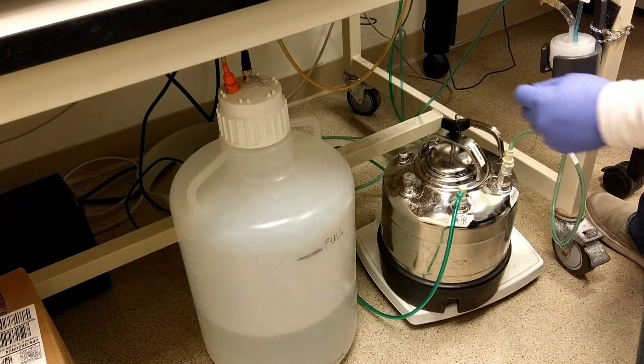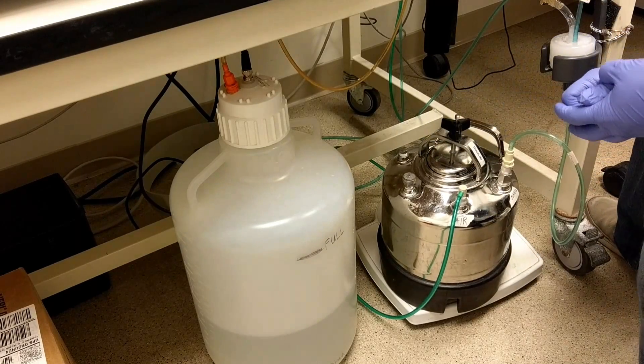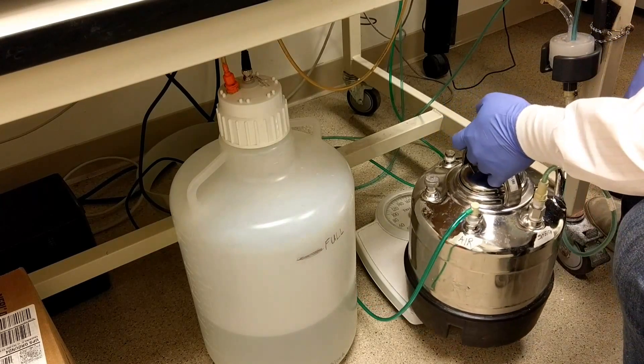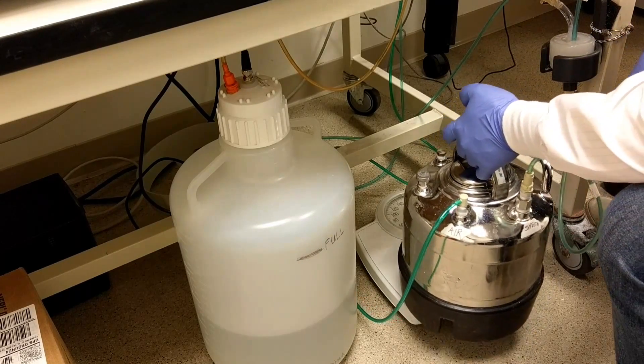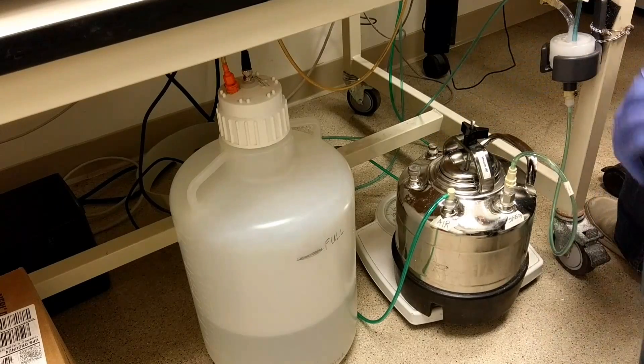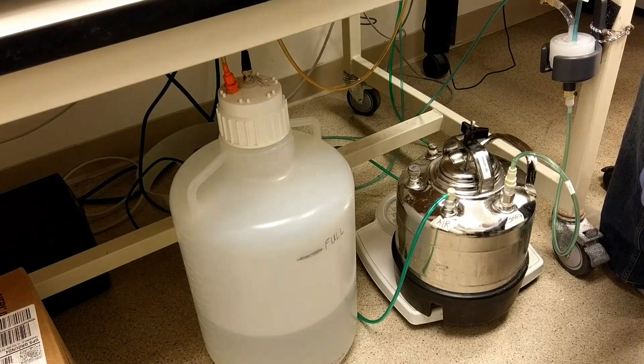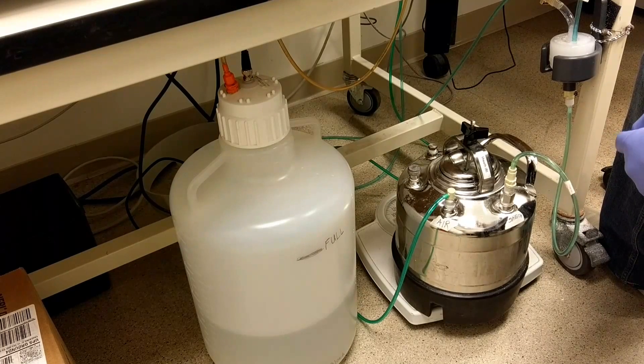We have it on a scale that's zeroed out to an empty sheath tank and it should read about 15 to 16 pounds when full and zero when empty. So it's a good idea to check the scale when you get on the instrument to make sure you have enough sheath for your run.